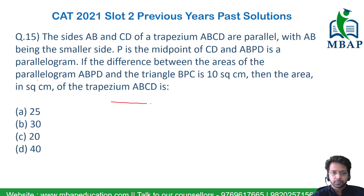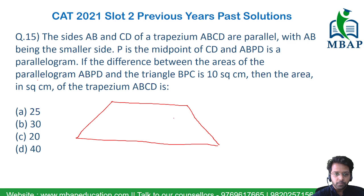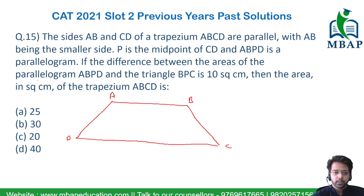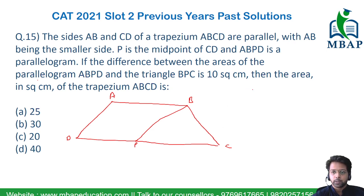Let's try to make this trapezium first, and then you will be able to easily visualize this and solve it in less than 1 minute. AB is the smaller side. Let's assume it as ABCD. P is the midpoint of CD — let's mark point C and join this. Now you can see a triangle BPC, and ABPD will be basically a parallelogram.